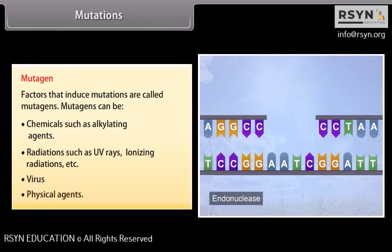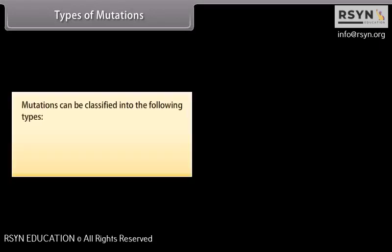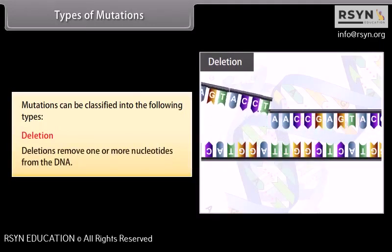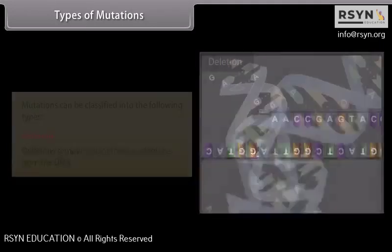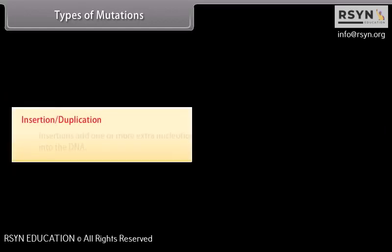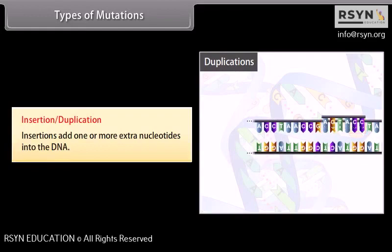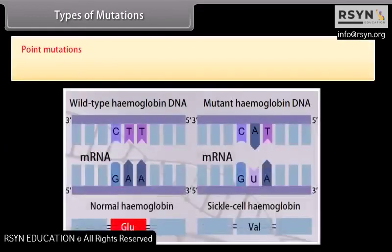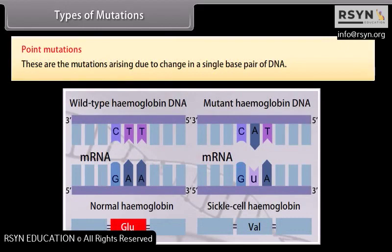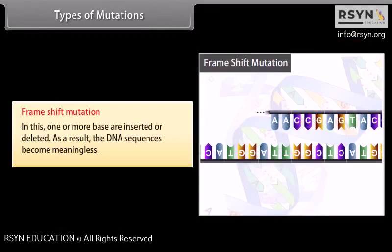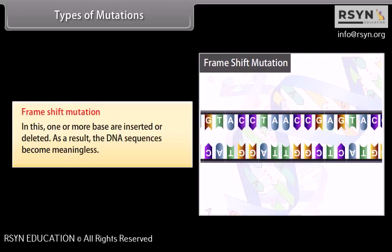Mutagens also include viruses and physical agents. Types of mutations: Deletion — removes one or more nucleotides from the DNA. Insertion or duplication — adds one or more extra nucleotides into the DNA. Point mutations — arise due to a change in a single base pair of DNA. Frame shift mutation — one or more bases are inserted or deleted, causing the DNA sequence to become meaningless.